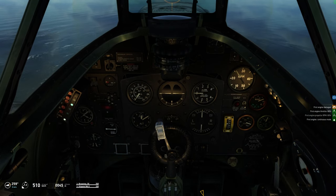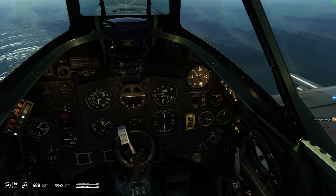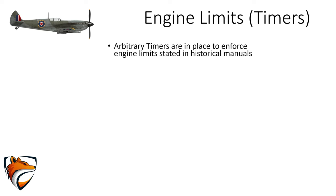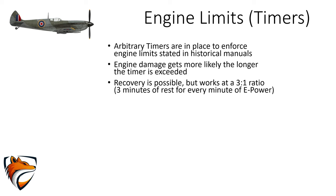The simulation can't reflect real maintenance, so the developers came up with an arbitrary engine timer model to force the player to keep the limits in mind. If you exceed the time in the game, there is a very high chance the engine gets damaged — this becomes more and more likely the longer the timer is exceeded. The timer can be recovered by throttling back to continuous power. The Spitfire recovers its emergency power timer at a 3-to-1 ratio, meaning that after using all 5 minutes of emergency power, you need to rest the engine at continuous power for 15 minutes to fully recover. The recovery works gradually — resting for 7.5 minutes recovers half the 5-minute timer.